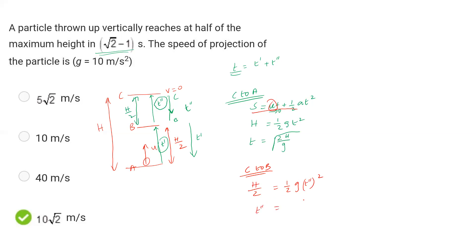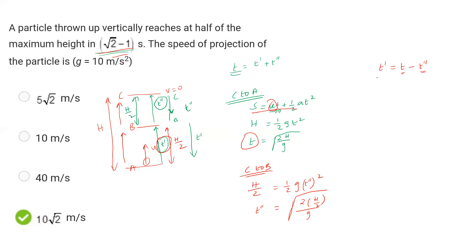So t'' squared is equal to 2g into h/2, divided by g squared. Solving, t' equals the total time T minus t''. The total time equals t' (A to B) plus t'' (B to C), so t' equals T minus t''.